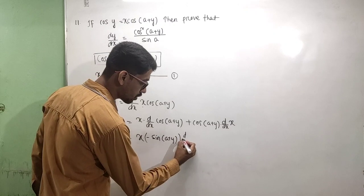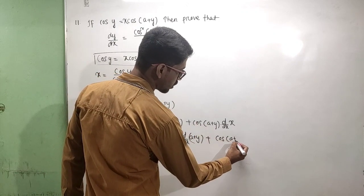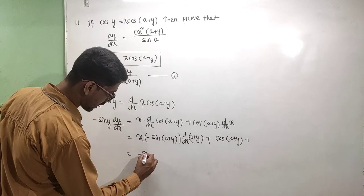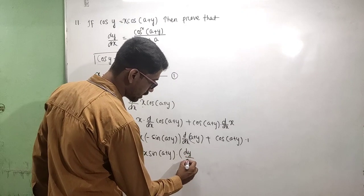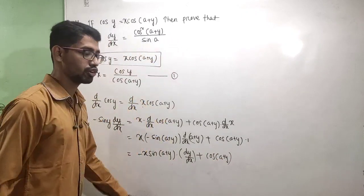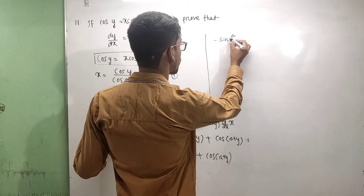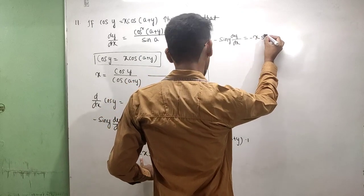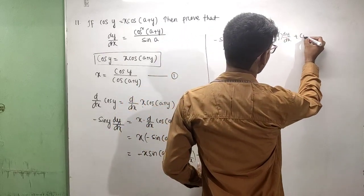Derivative of (a + y): derivative of a is 0, derivative of y is dy/dx. Plus cos(a + y) into derivative of x with respect to x, which is 1. So we have: minus sin y · dy/dx is equal to minus x · sin(a + y) · dy/dx plus cos(a + y).